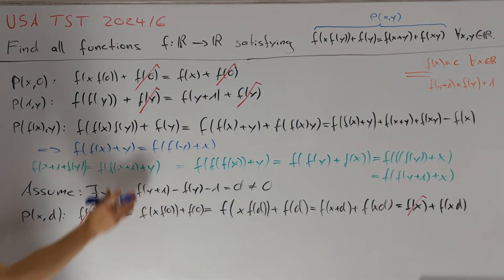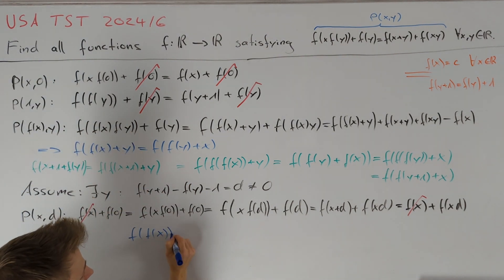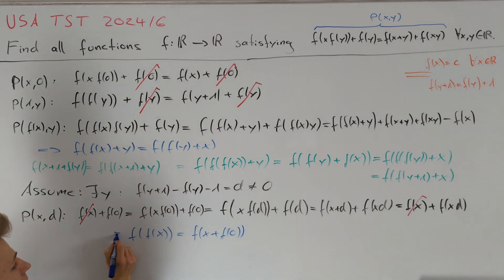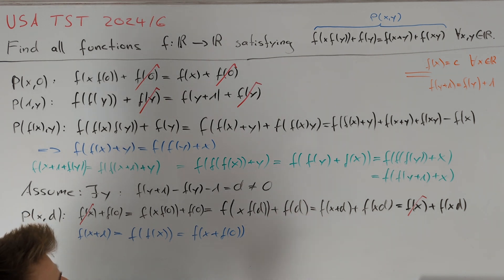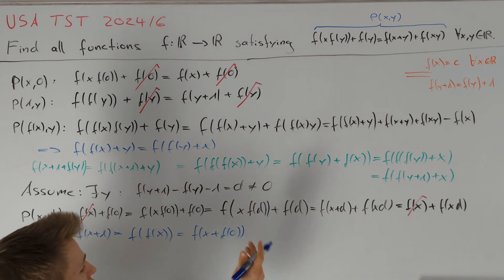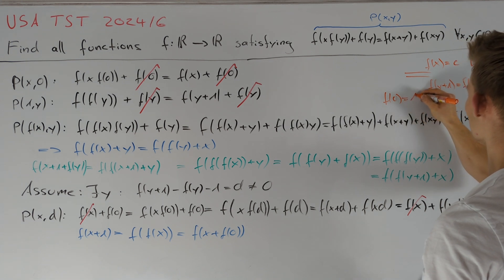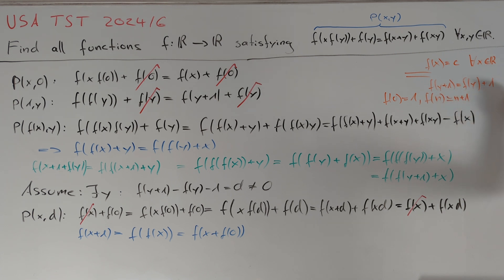Plugging y = 0 into f(f(x)+y) = f(f(y)+x), we get f(f(x)) = f(x) + f(0). The left hand side equals f(x) + 1. If f(0) ≠ 1, then our function is again periodic and thus constant by the same argument. So if we are not in that case, f(0) = 1, and together with f(y+1) = f(y) + 1 we conclude by induction that f(n) = n + 1 for all integers n.